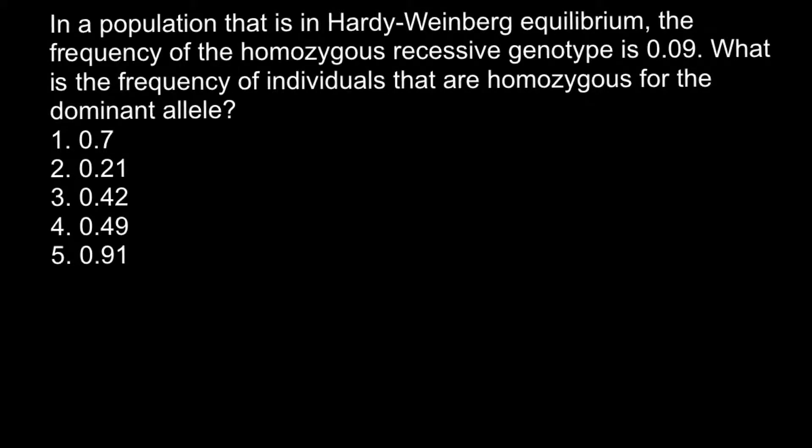Hi, this video is going to be about population genetics. Today's problem is: in a population that is in Hardy-Weinberg equilibrium, the frequency of the homozygous recessive genotype is 0.09. What is the frequency of individuals that are homozygous for the dominant allele?